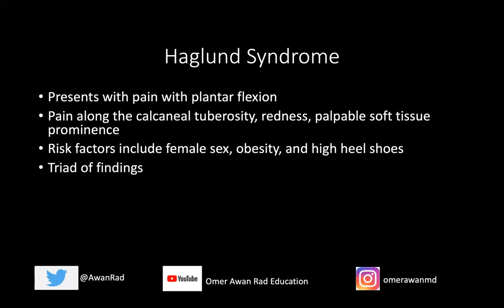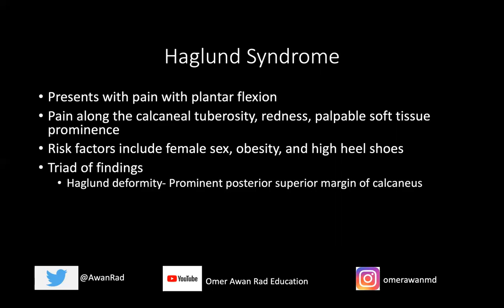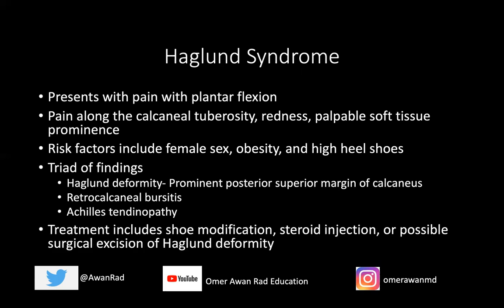The three findings associated with Haglund syndrome are the Haglund deformity — a prominent posterior superior margin of the calcaneus — retrocalcaneal bursitis, and Achilles tendinopathy. Patients can have the Haglund deformity without Haglund syndrome, so you really need all three findings. Treatment often includes shoe modification — tell the patient to wear flats and stop wearing high heels. The retrocalcaneal bursitis and Achilles tendinopathy tend to get much better. We can also inject steroid into the retrocalcaneal bursa to reduce inflammation as a temporary solution.